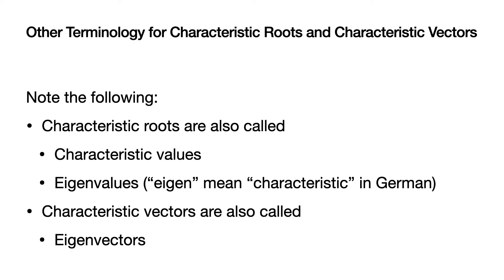Note that there is other commonly used terminology for characteristic roots and characteristic vectors. Characteristic roots are also called characteristic values, and more commonly, eigenvalues — the word 'eigen' being German for characteristic. And with that, characteristic vectors are also called eigenvectors. The most commonly used terminology for characteristic roots and characteristic vectors would be eigenvalues and eigenvectors.